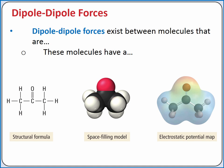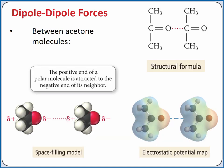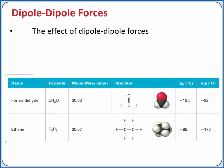Our next intermolecular force, dipole-dipole forces, exist between molecules that are polar, which have a permanent dipole. An example is acetone. In acetone, the carbon-oxygen double bond is polar — the electrons spend more time near the oxygen atom because oxygen is more electronegative. So oxygen has a partial negative and carbon a partial positive. The partial negative of one acetone molecule will be attracted to the partial positive of another acetone molecule. This is the dipole-dipole force. Dipole-dipole forces are generally stronger than dispersion forces.